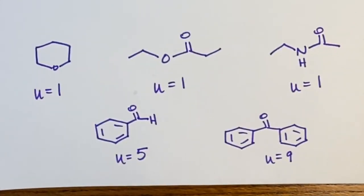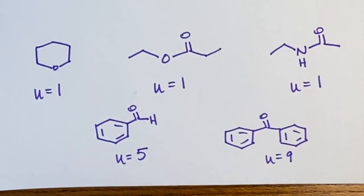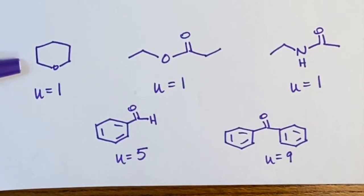You should also be able to look at a structure and determine the number of units of unsaturation. This provides a check when analyzing an NMR spectrum as to whether your structure meets the chemical formula. For instance, a molecule with 1 ring has U = 1.